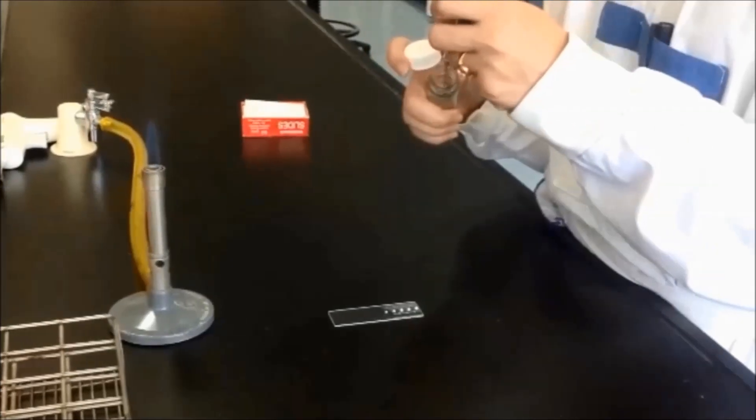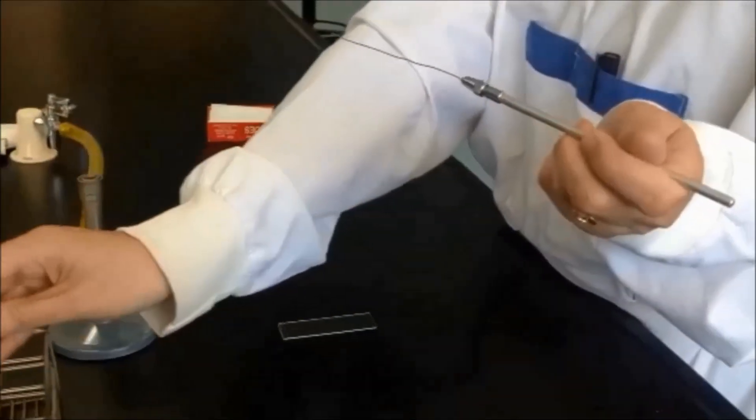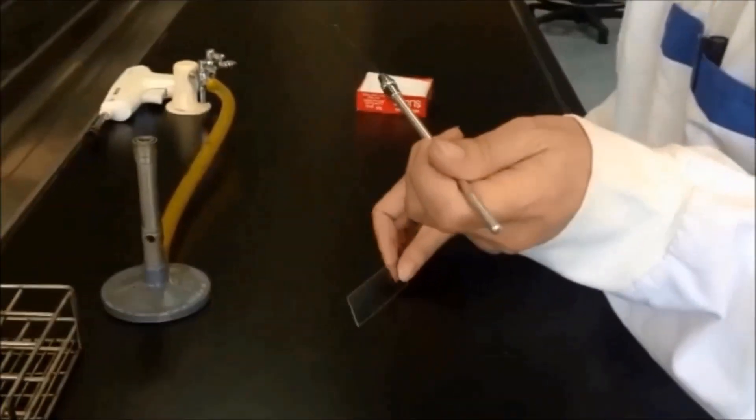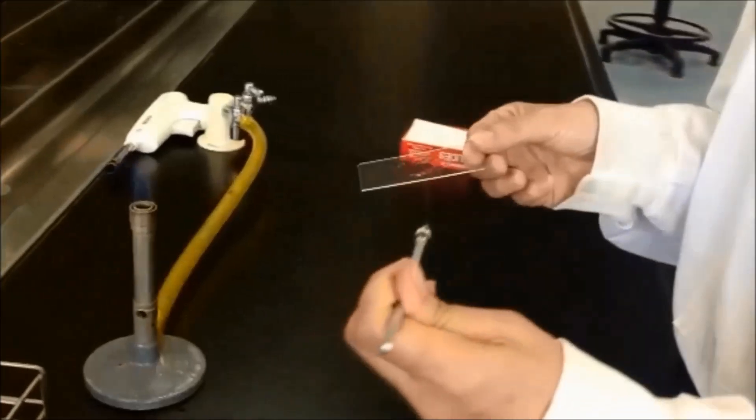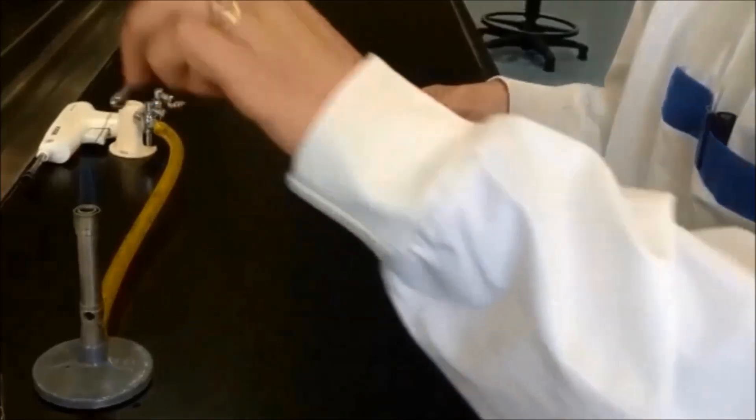Once the loop has cooled down, take a loopful of the broth culture, then spread it thinly onto the surface of the slide. Re-sterilize the loop.